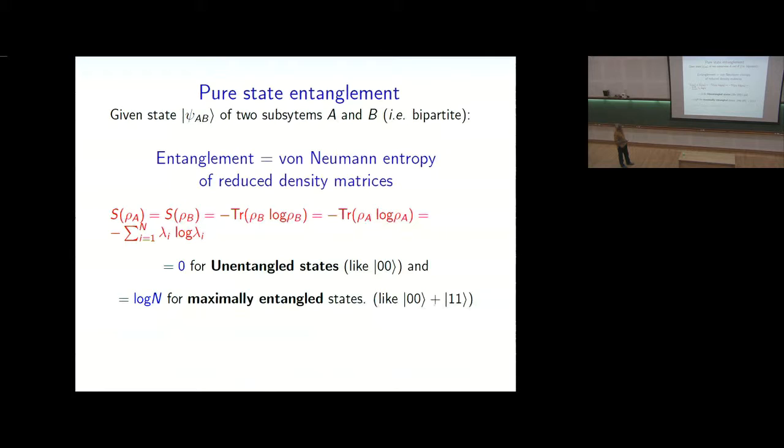So the reduced density matrices in this case, where it's unentangled, will be a pure state itself. So the reduced density matrix spectrum, which is these lambda i, will be in this case one eigenvalue will be one, everything else zero. And in this case, all the eigenvalues will be equal to one over n. So that's the situation, two extreme cases of unentangled states and maximally entangled states.